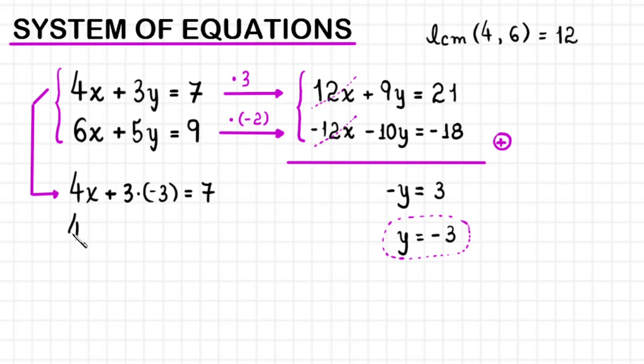4x, 3 times negative 3 equals negative 9, equals 7. Let's organize things here.